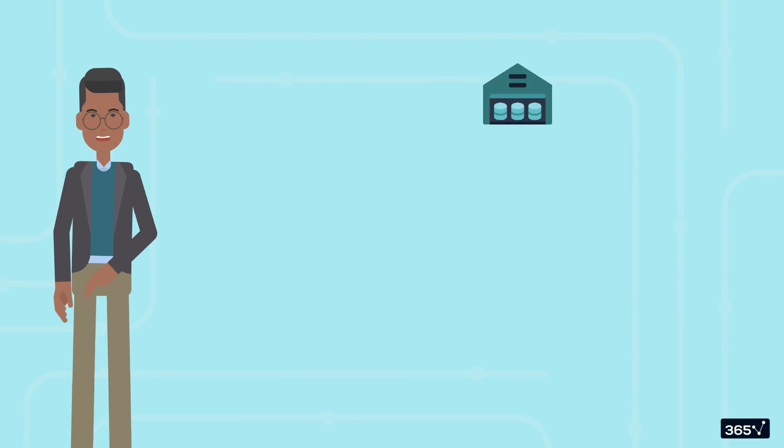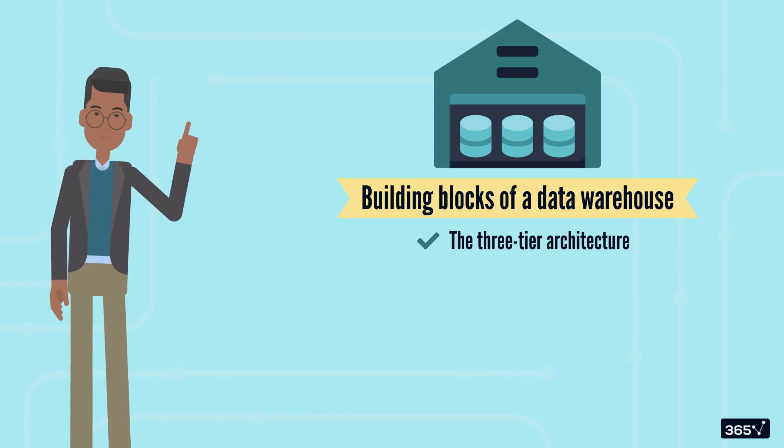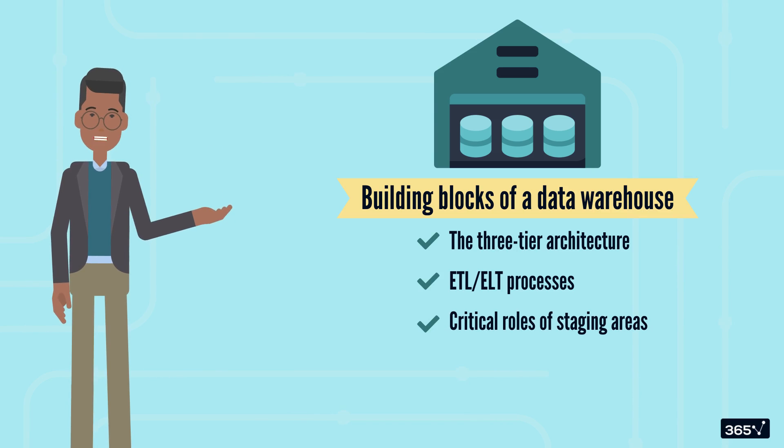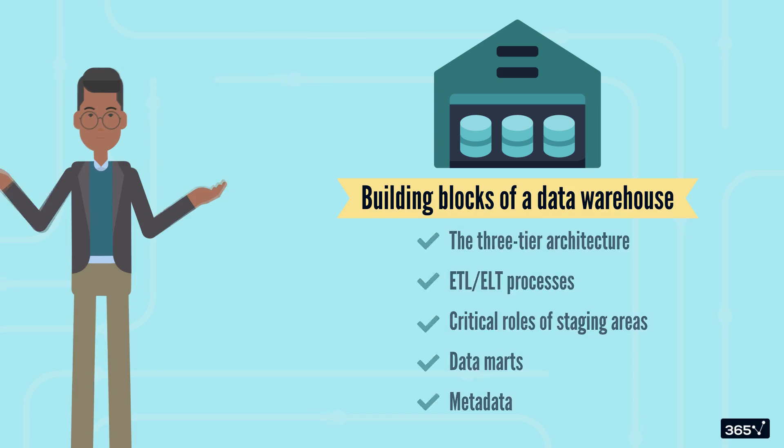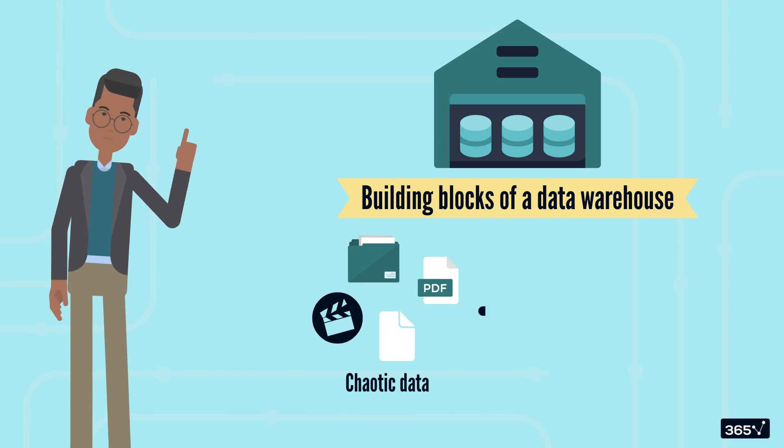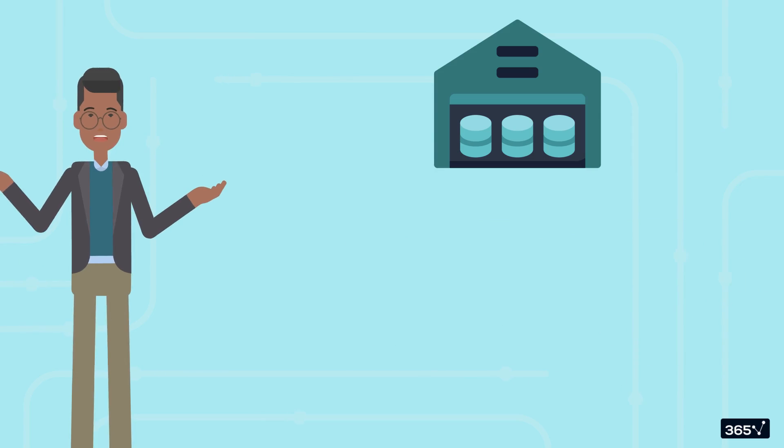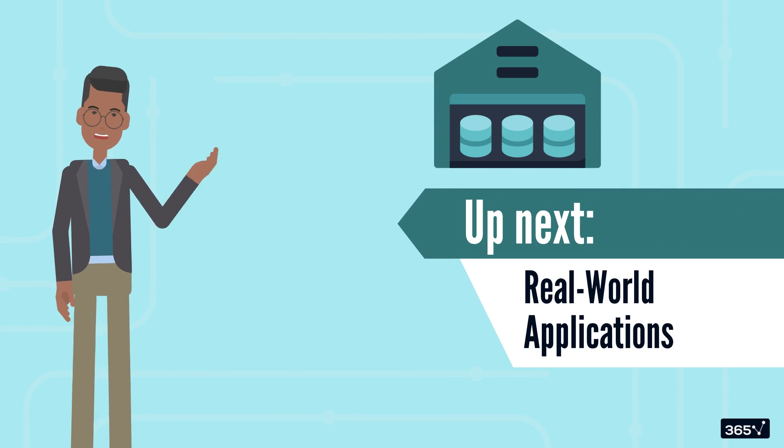So, we've uncovered the building blocks of a data warehouse—the three-tier architecture, ETL, ELT processes, and the critical roles of staging areas, data marts, and metadata. With these components working in harmony, data warehouses transform chaotic data into clear, actionable insights. Next time, we'll dive deeper into how these components interact within different types of data warehouse designs.